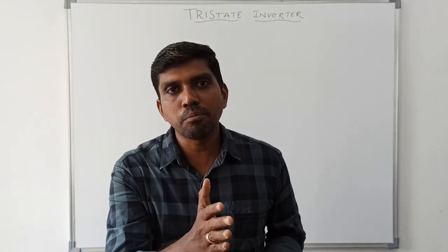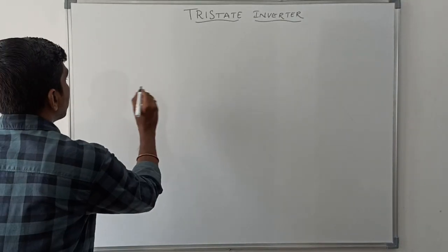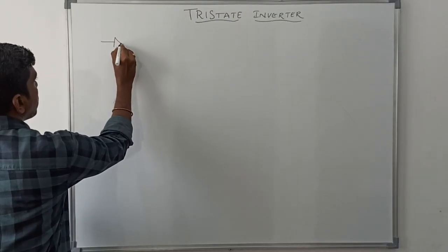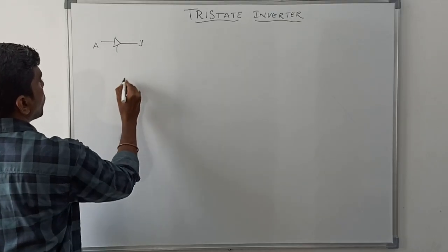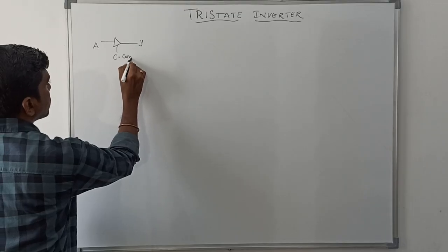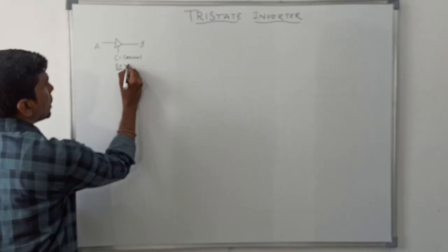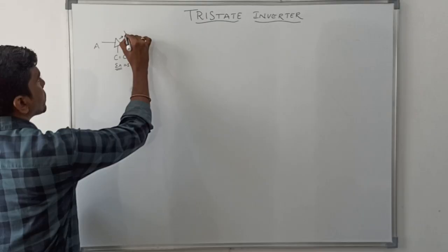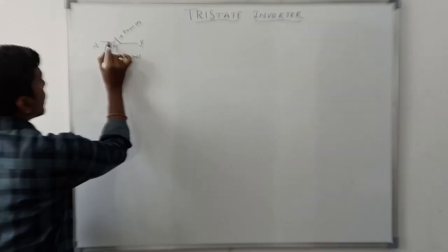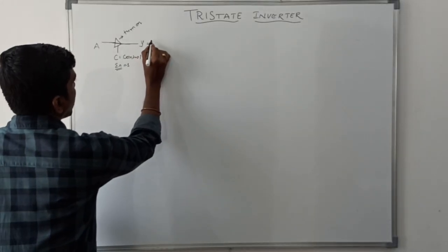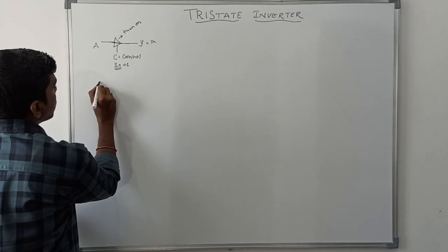This circuit is suitable for tri-state buffer and also tri-state inverter. Now I am going to draw the symbol of a tri-state buffer. Here A is the input, Y is the output, and C is the control or enable signal. Whenever the enable signal equals one, the device turns on — the tri-state buffer is active and the output Y equals A.